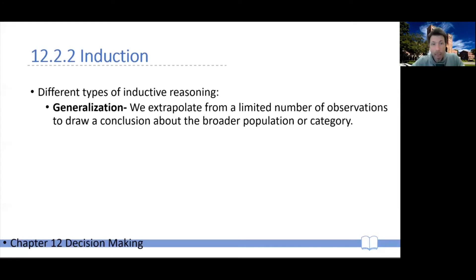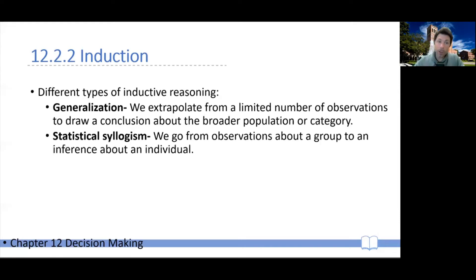A different type of inductive inference is what we refer to as a statistical syllogism. Now, this is when we go from observations about a group, observations that are likely inside a group, to inference about a specific individual. And these type of syllogisms typically make use of qualifying words like most or frequently or almost never or rarely. Or in fact, they might even have statistical generalizations within their premises.